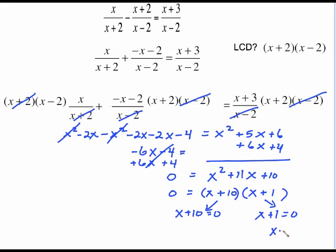I can set x plus 10 equal to zero and I can set x plus 1 equal to zero. Solve each of those. This gives me x equals negative 1. This gives me x equals negative 10. Be sure to check. Plug these back in. Will either of these create a zero in the denominator? No. So negative 10 and negative 1 are your two solutions.